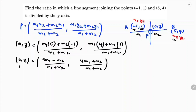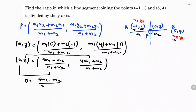Now equate abscissa with abscissa, because if we equate the ordinate there is no use since we don't know the value of y. So equate abscissa with abscissa: 0 = (5·m1 − m2) / (m1 + m2). Cross-multiplying gives 5·m1 − m2 = 0.